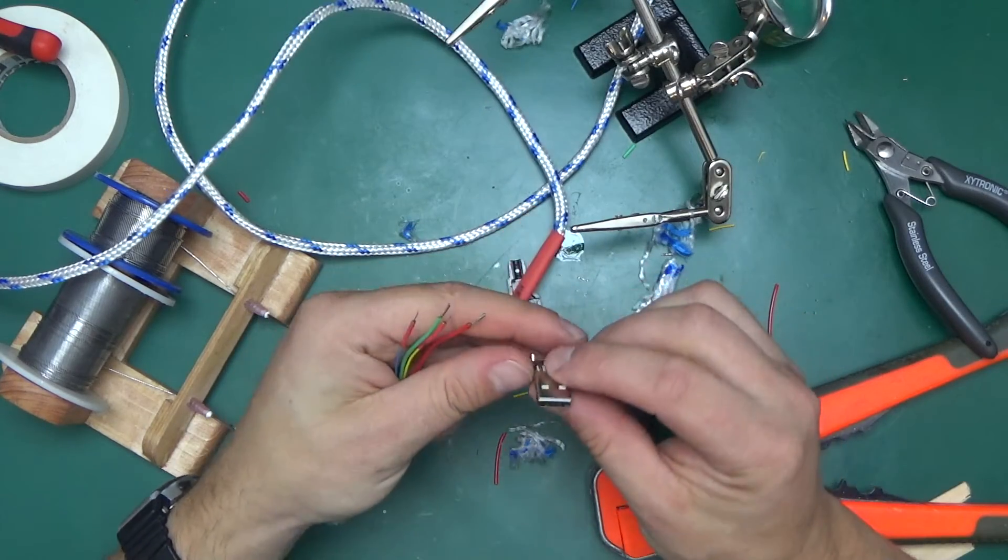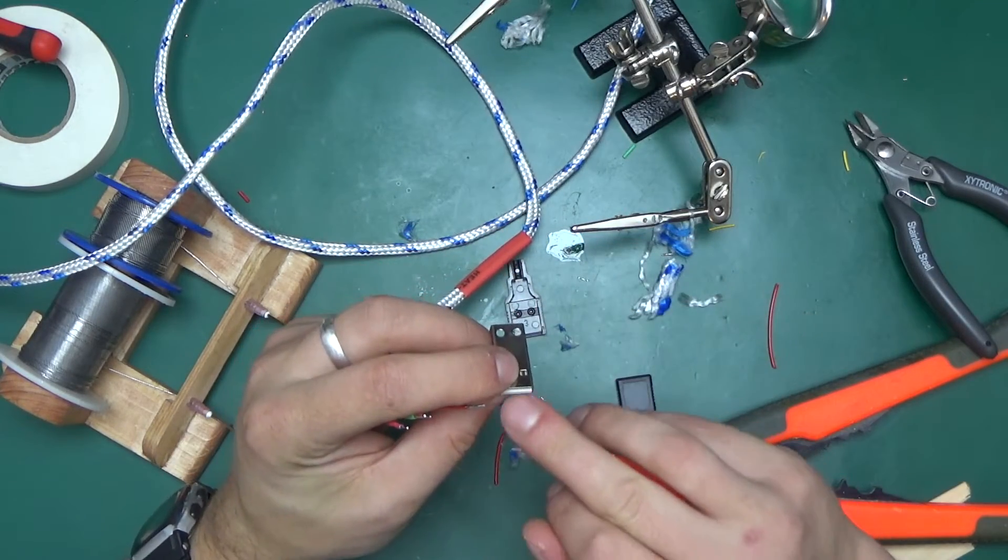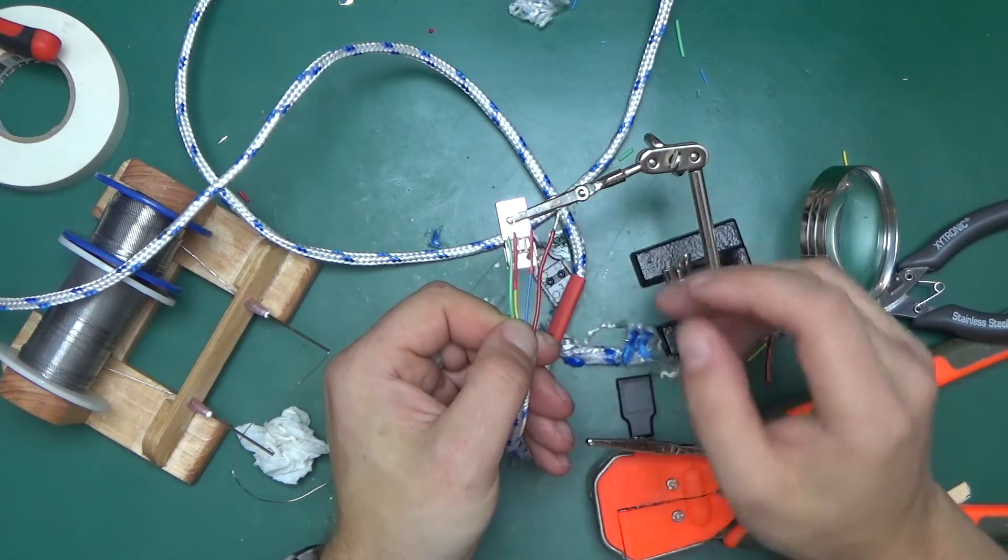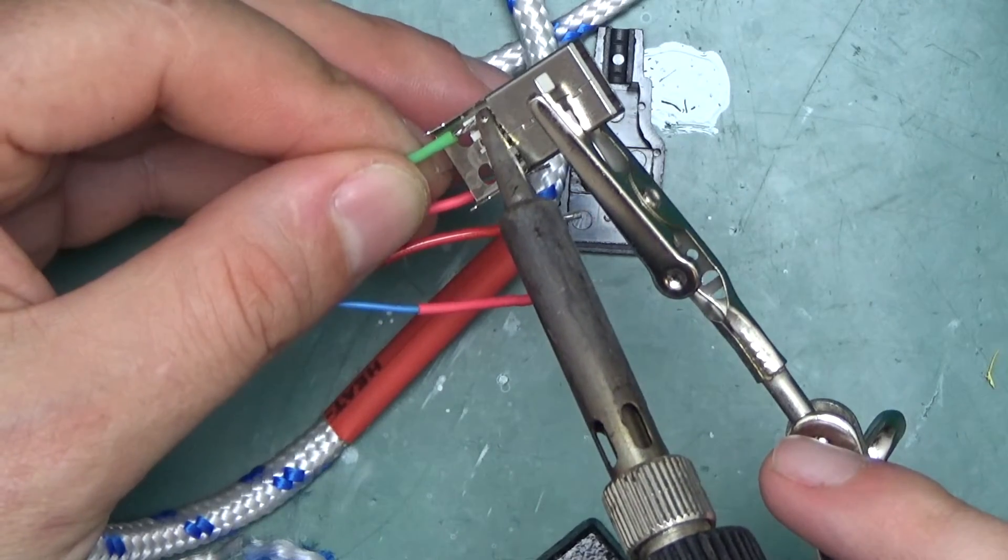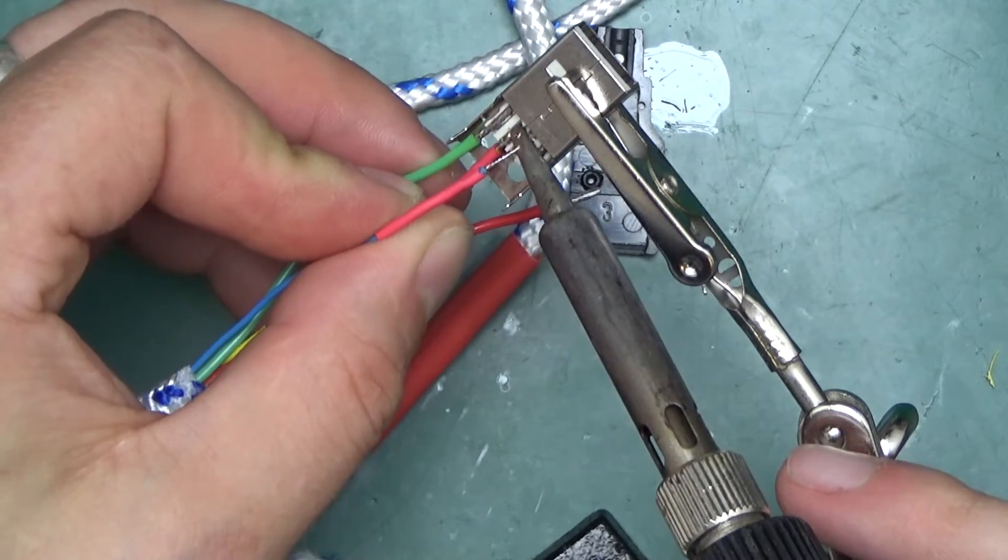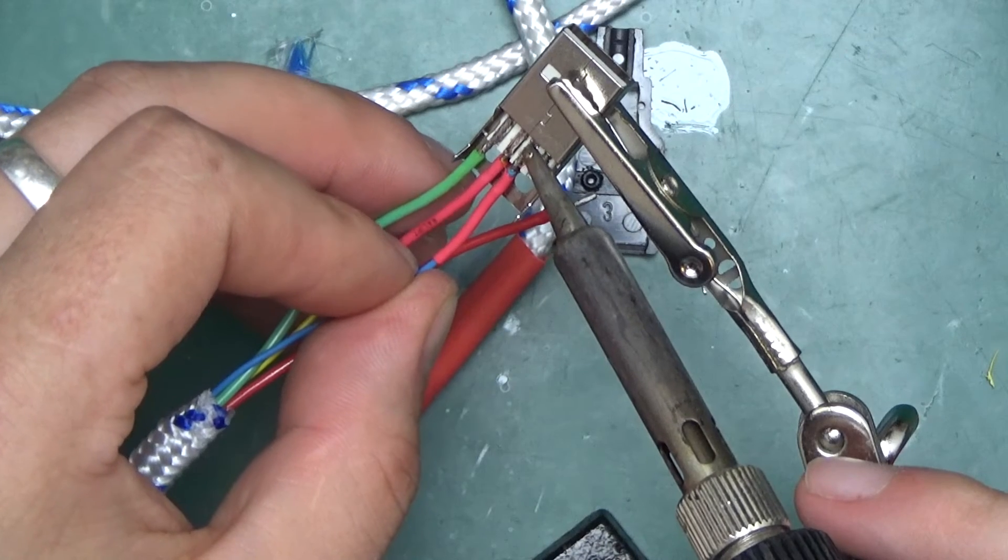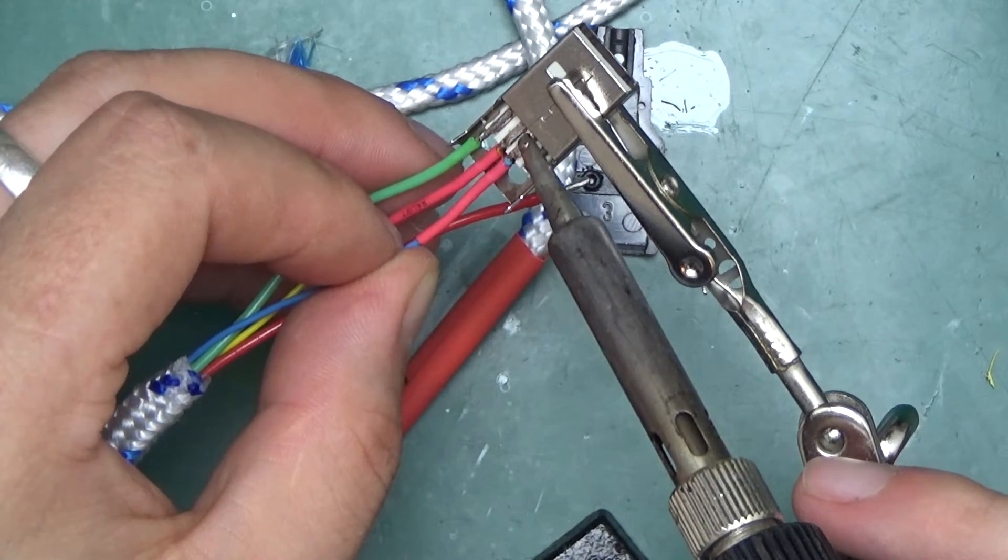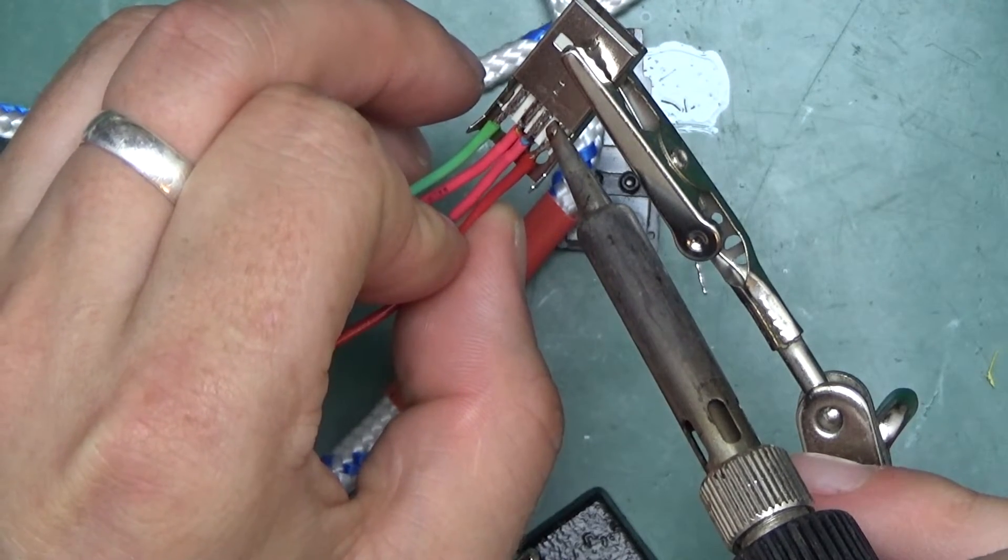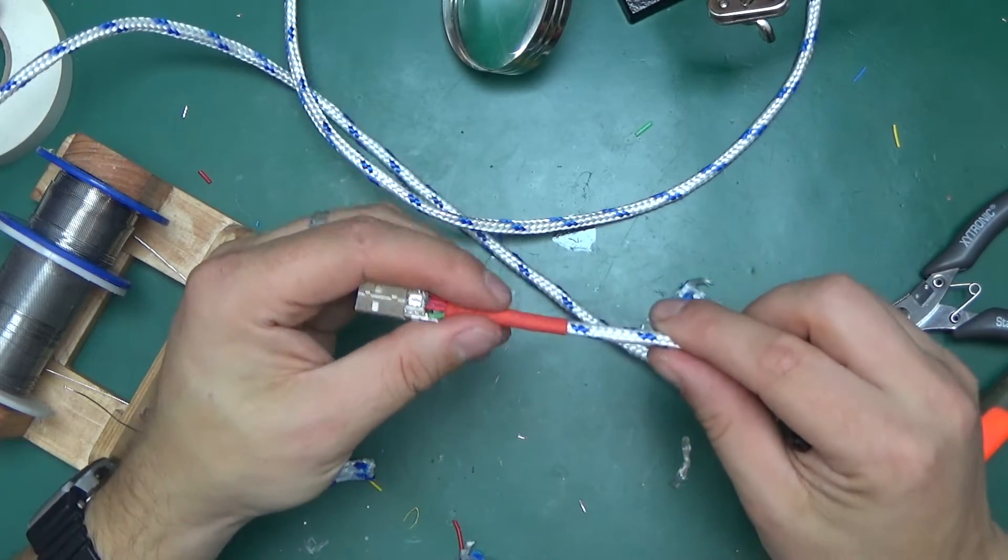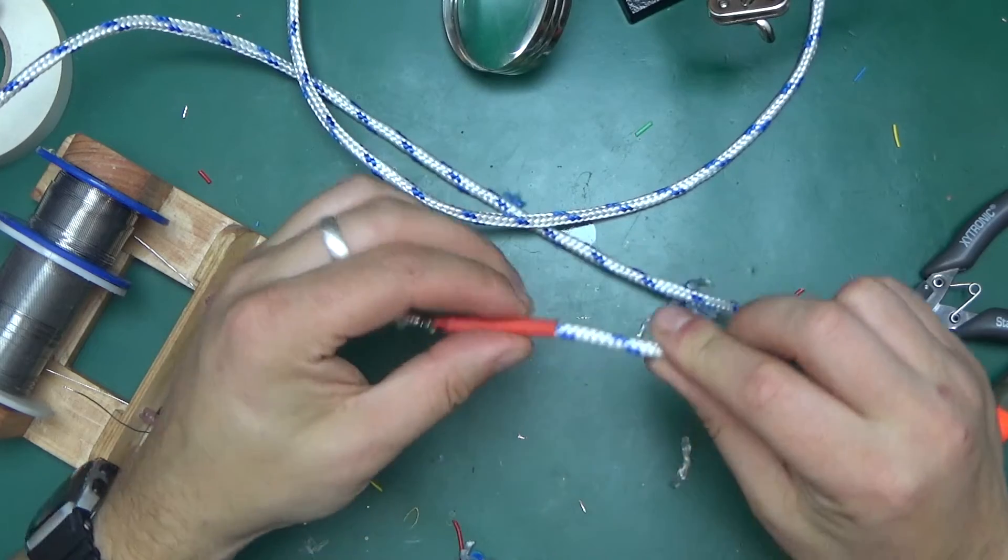And now the socket. So remembering that this is one, two, three, four, plus, D minus, D plus and ground. So after pulling back the braiding all the way to the plug and heat shrinking the piece of heat shrink that we've put on, we ended up with a nice cable.